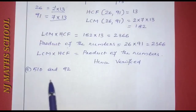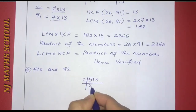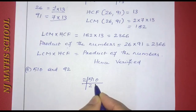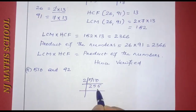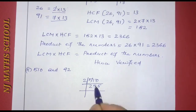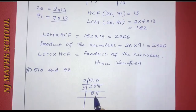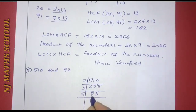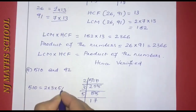Next numbers are 510 and 92. Factorizing 510: 2 into 3 into 5 into 17. Factorizing 92: 2 into 2 into 2 into 23, which is 2 squared into 23.